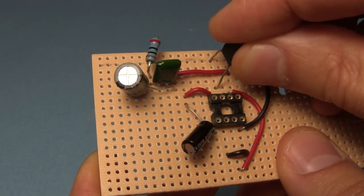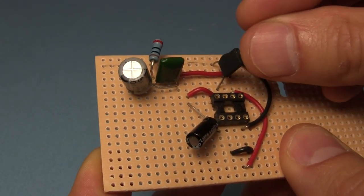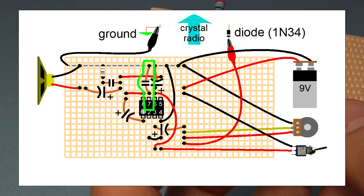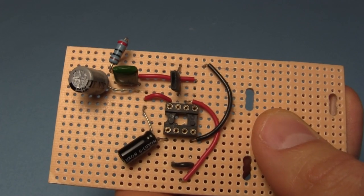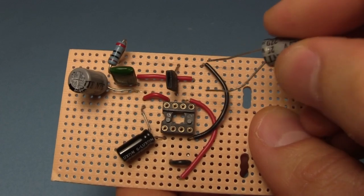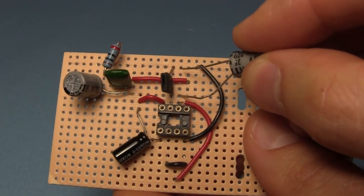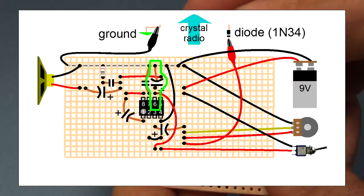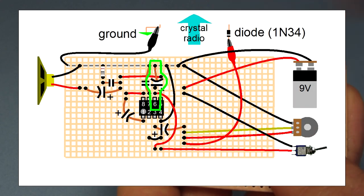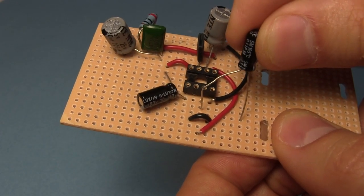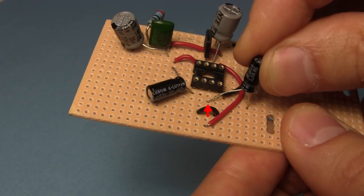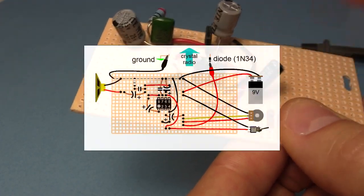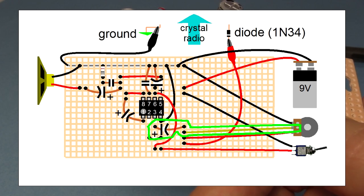Next, put the 0.1 microfarad capacitor in these holes, oriented either way. That connects it between pin 7 and ground. And lastly, for that side of the chip, take the remaining 220 microfarad capacitor and put the positive leg here and the negative leg here. That connects it between pin 6 and ground. Take the remaining 10 microfarad electrolytic capacitor and put the positive leg here and the negative leg here. That connects it between pin 3 and the middle of the potentiometer, which we'll connect next.